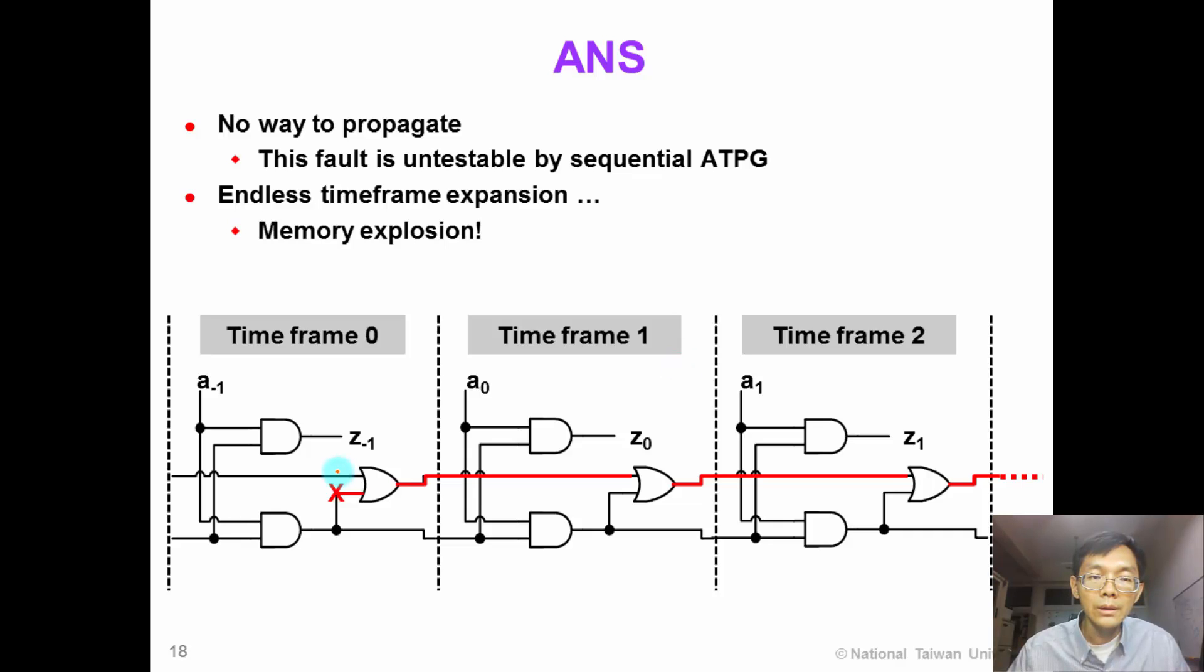Okay, back to the video. Have you generated a test successfully? Actually, this fault is untestable by sequential ATPG. When we try to propagate the fault to the right, it just keeps going and going without reaching to any primary output. So there is actually no way to propagate this fault. This is an example of untestable fault by sequential ATPG.